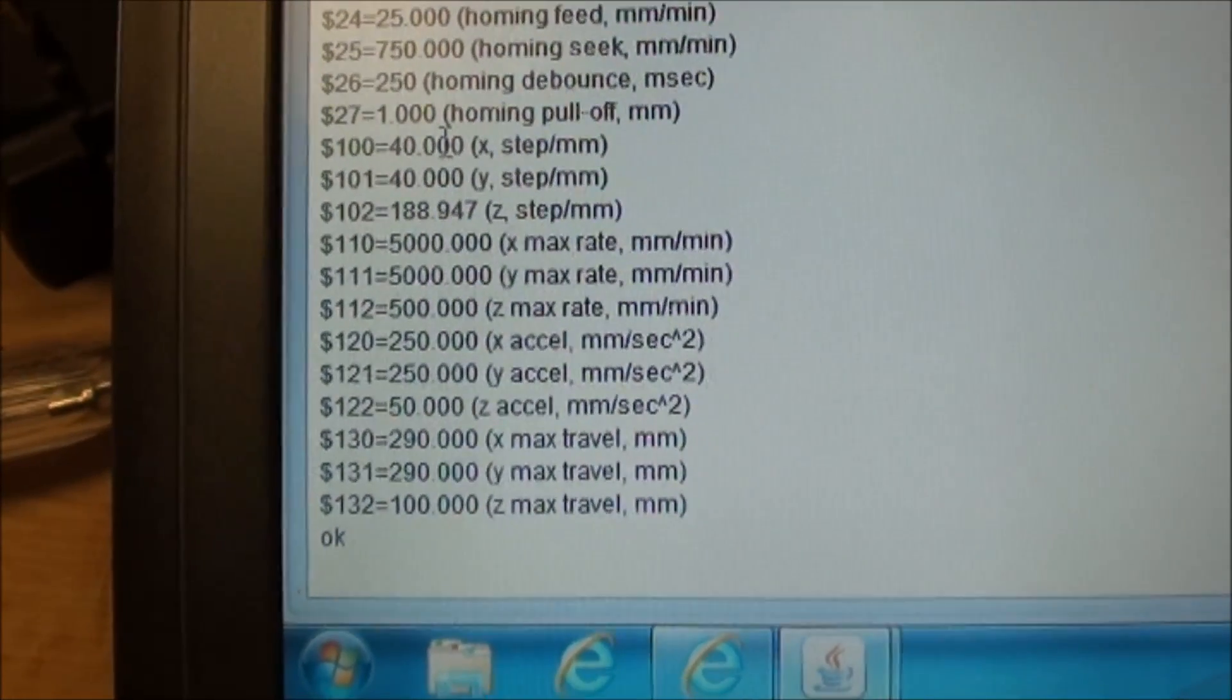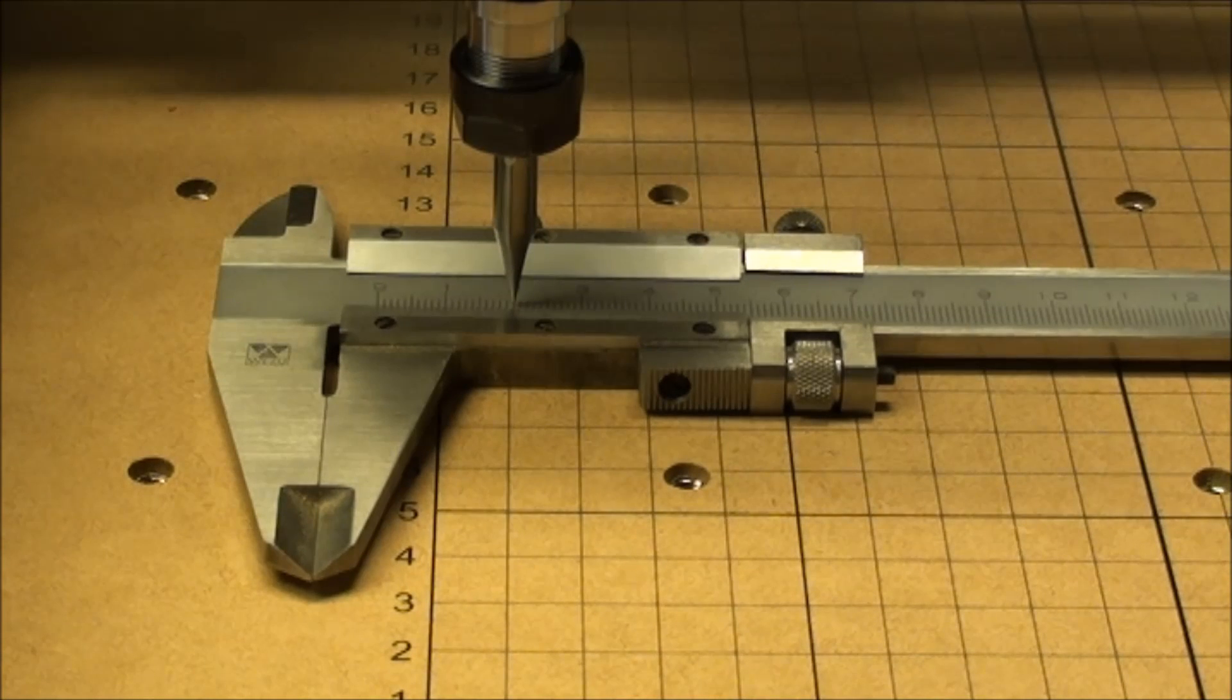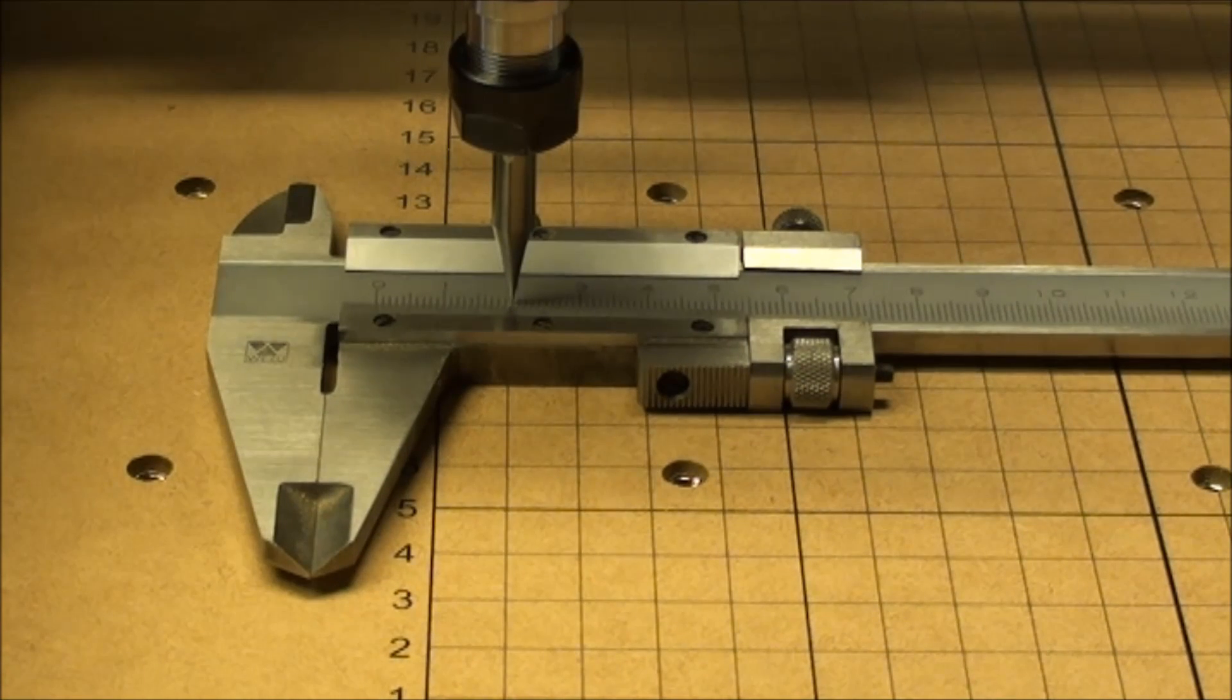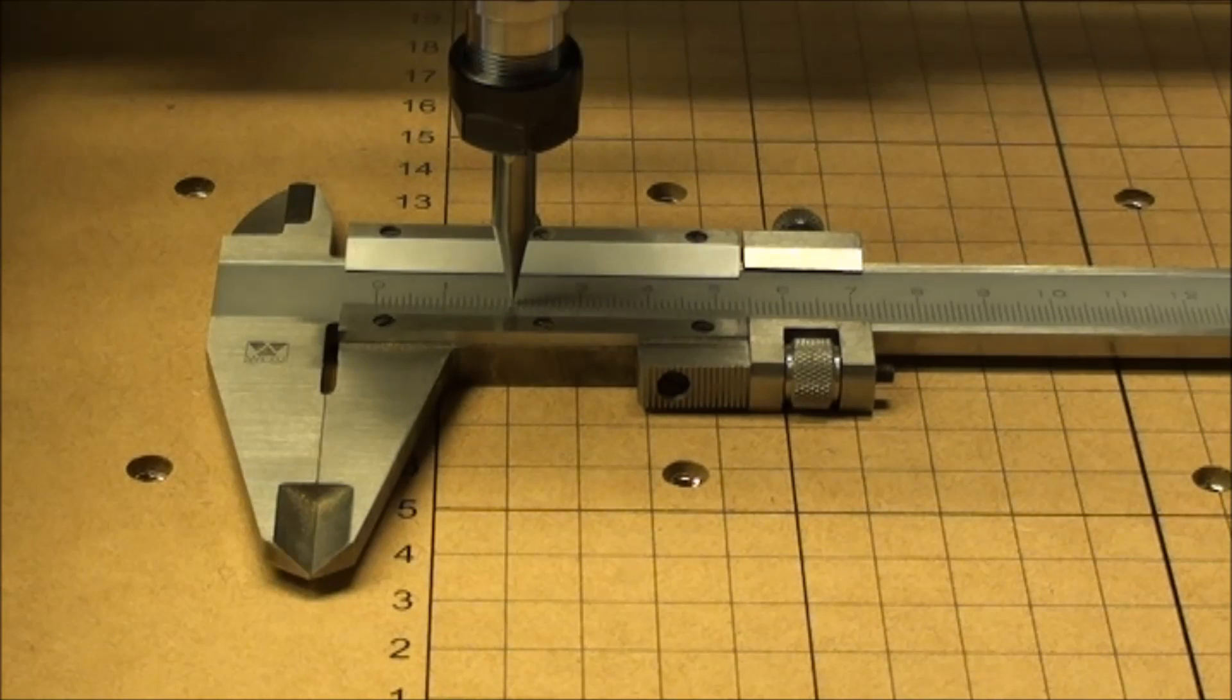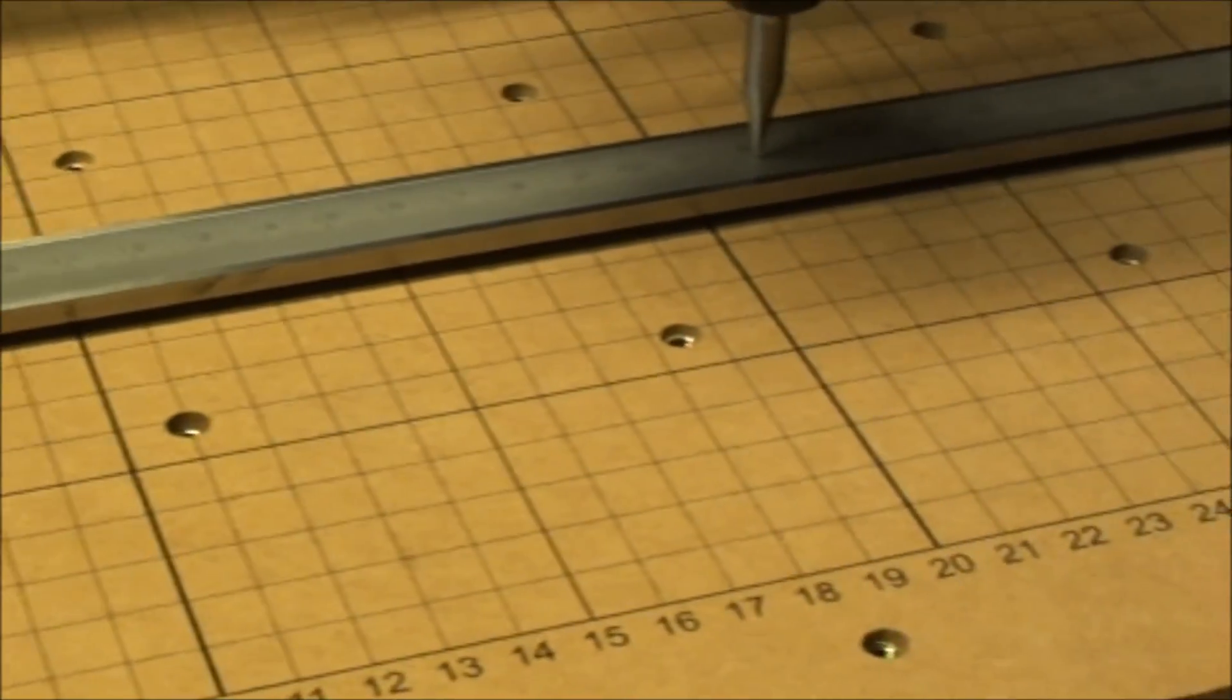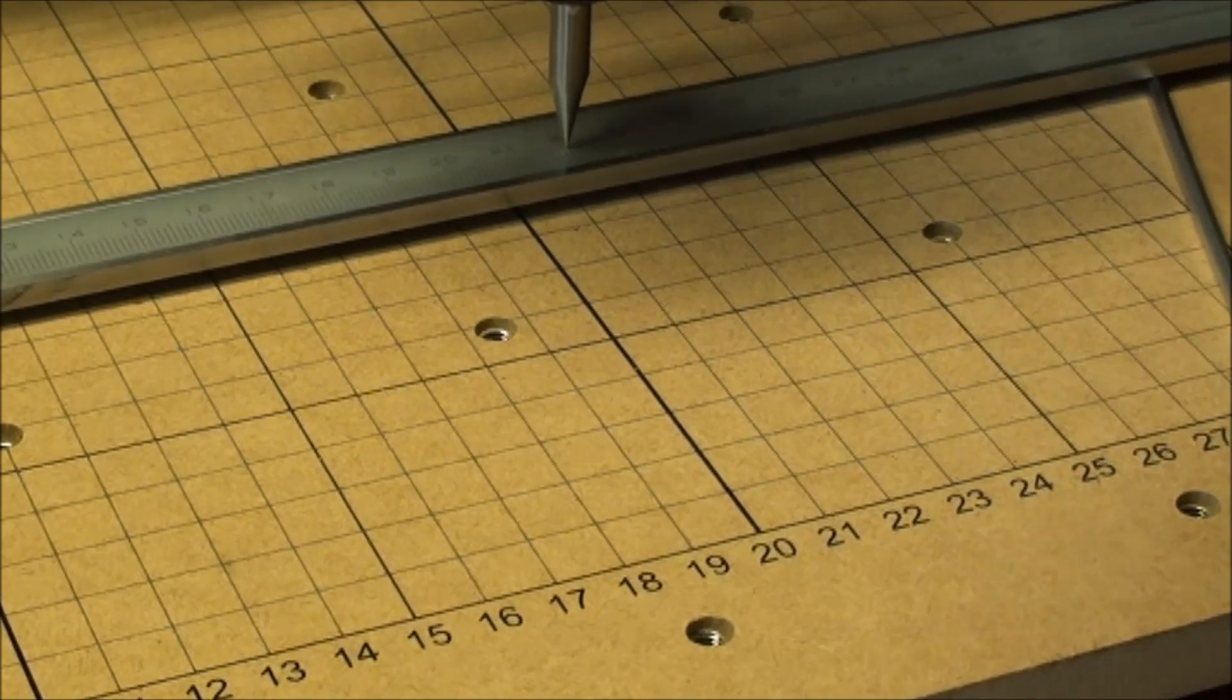On the computer I'm ready to issue a command X200, which should make the machine move 200 millimeters. Right now it is exactly sitting at 20 millimeters, so if it works and it's precise it should end up at 220.